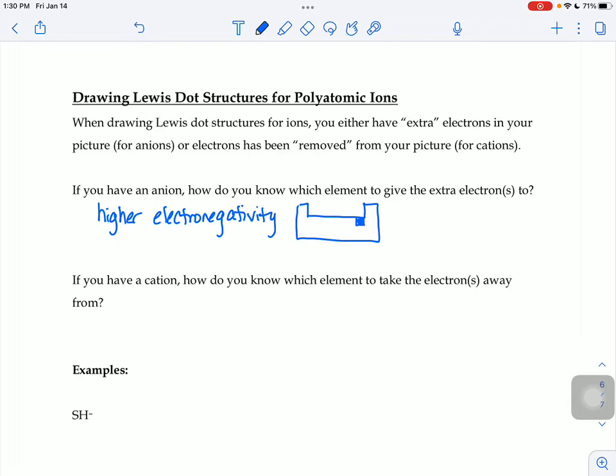If you have a cation, that means you're taking an electron away from your picture. So how do you know which element you're going to take the electron away from? Generally speaking, we're going to take the electron away from the elements that have low ionization energies, elements where you don't have to work very hard to take the electron away, because it's the easiest to remove.